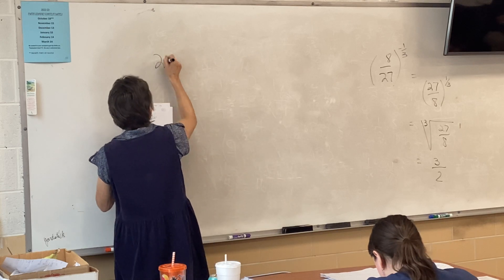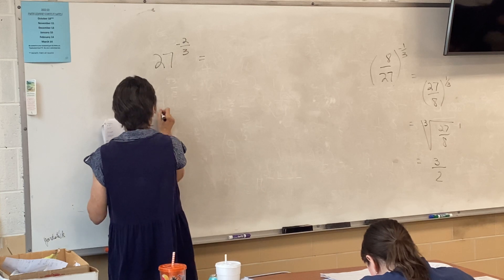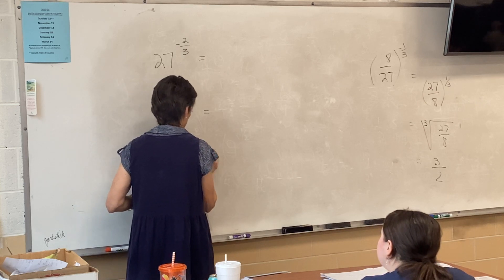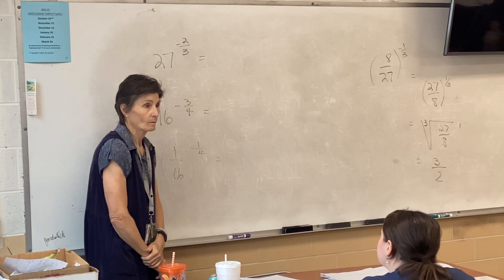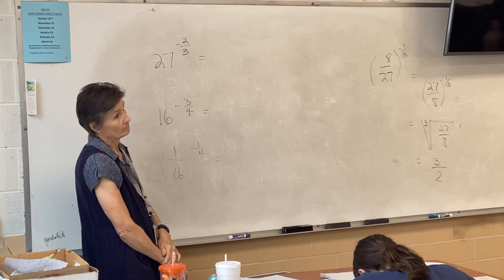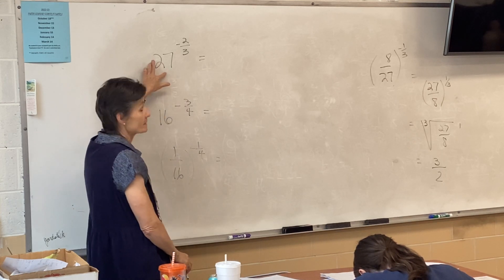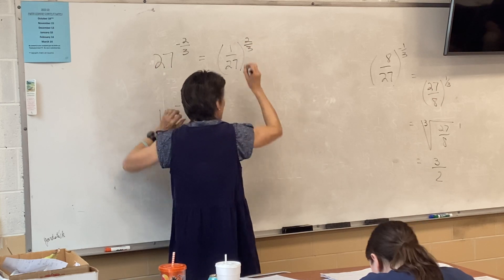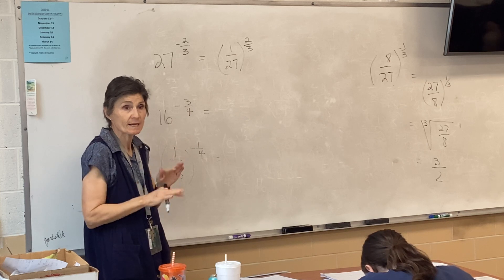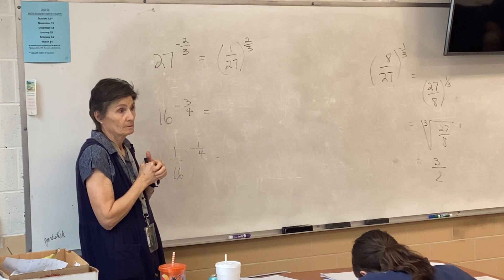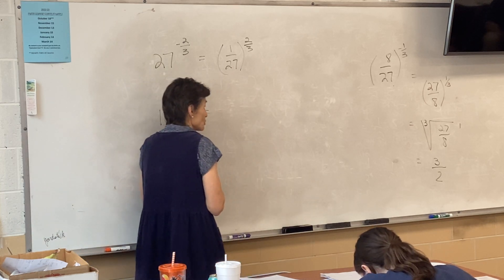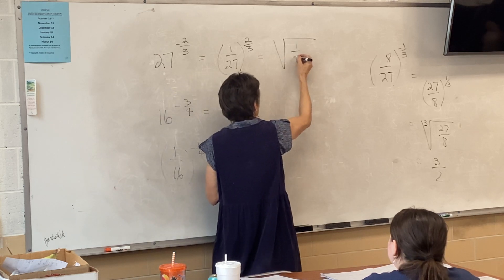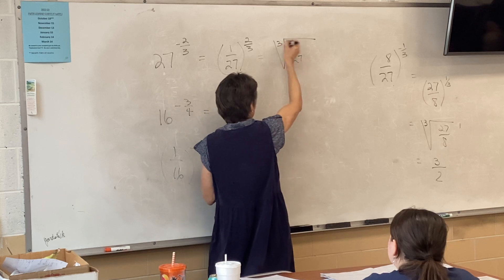It's to the two-thirds power. Your exponent doesn't flip — the only change you make to the exponent is it becomes positive. What does a fractional exponent mean? A radical. So this is going to have a radical, and under the radical it's going to be 1/27, and this is going to be a cube root squared.